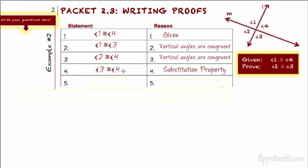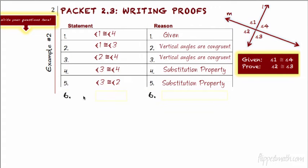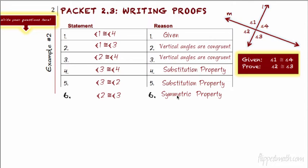Now I see angle 2 is congruent to 4, so I'm going to take the 4 out and put a 2 in, giving us angle 3 is congruent to angle 2. But that's not the same as 2 is congruent to 3 — it's close, but not the same. So we need one more step: if 3 is congruent to 2, then we know 2 is congruent to 3, which is the symmetric property. That's how you do the geometric proof — that's one method. But remember, I told you at the beginning there are different ways to do this.